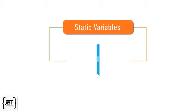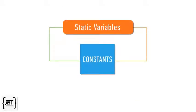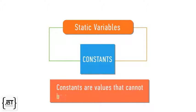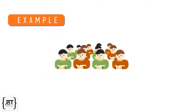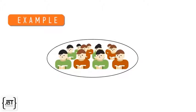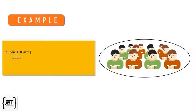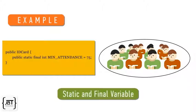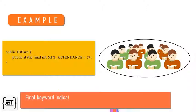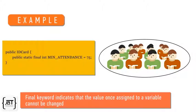Static variables are commonly used for defining constants as well. Constants are values that cannot be changed once initialized. For example, we want to define a constant value for the minimum attendance of a student. We would not like every object of ID card to keep a copy of this variable, so we can define it as a static and final variable. The final keyword indicates that the value once assigned to a variable cannot be changed. Thus, min attendance is a class variable with a value that can never be changed.